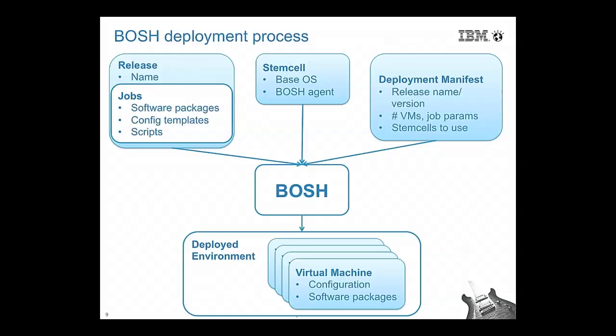A job is a collection of software packages with config files — for example, deploying MySQL or PostgreSQL is a job. A release is a compilation of all these jobs together. A stemcell is a base OS image with Bosh agents embedded in it, and all Cloud Foundry deployments go on stemcells converted into VMs. At the heart of a Cloud Foundry deployment is the deployment manifest, which combines jobs, releases, and IaaS infrastructure information, and tells Bosh to deploy Cloud Foundry onto virtual machines in your IaaS environment.